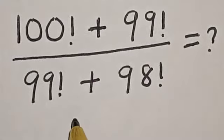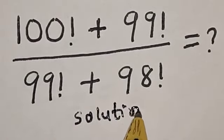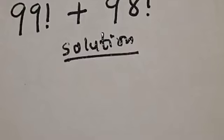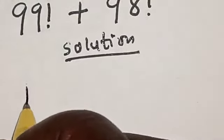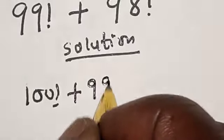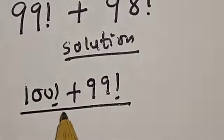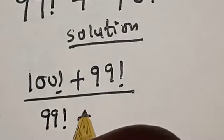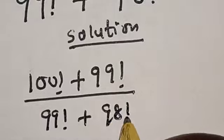Solution. We have the given question: 100 factorial plus 99 factorial divided by 99 factorial plus 98 factorial.